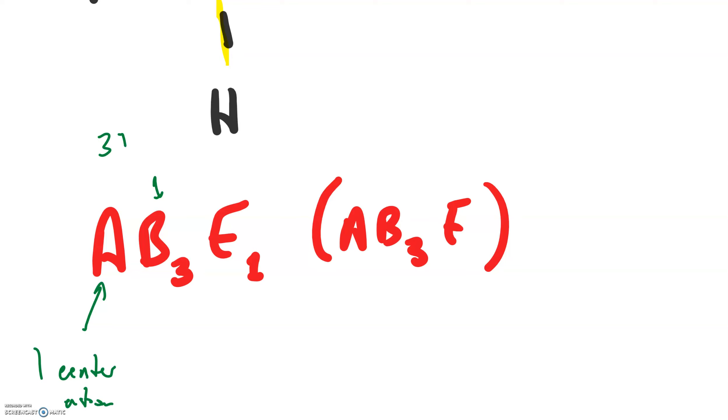What this means is that we have one center atom, we have three bonded atoms, and we have one lone pair. This is AB3E or AB3E1. And according to this chart, it has this geometry.